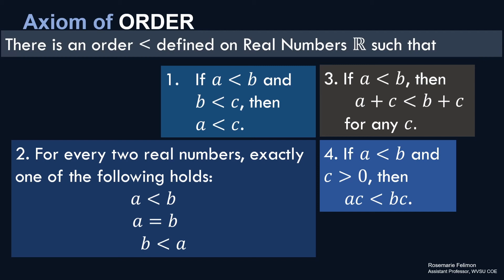Number two, for every two real numbers, exactly one of the following holds: a is less than b, a is equal to b, or b is less than a. So this is a trichotomy property. Only one should hold for a field in order for it to be an ordered field. For example, we have two numbers, 3 and 4. And we all know that only one holds for 3 and 4. That is, 3 is less than 4. It is not possible for 3 to be equal to 4 or 4 to be less than 3 if we already know that 3 is less than 4. So only one of these three conditions would hold if we have two real numbers.